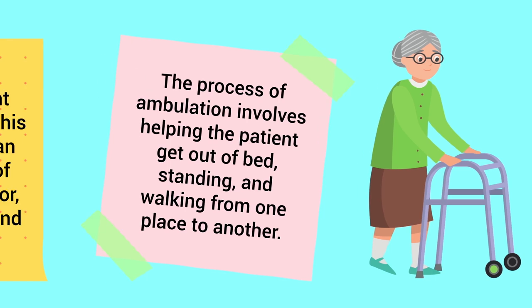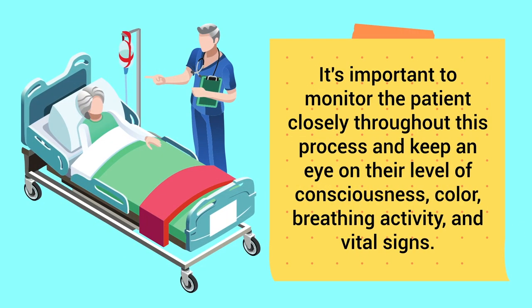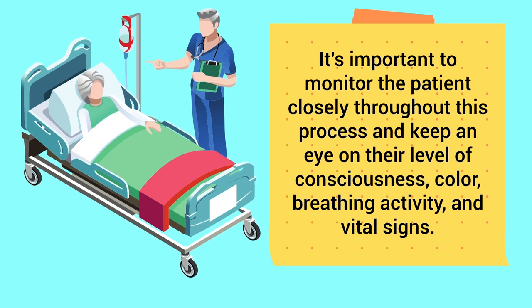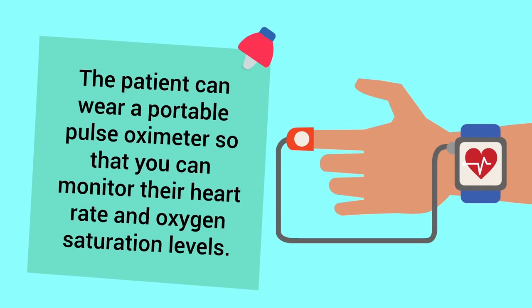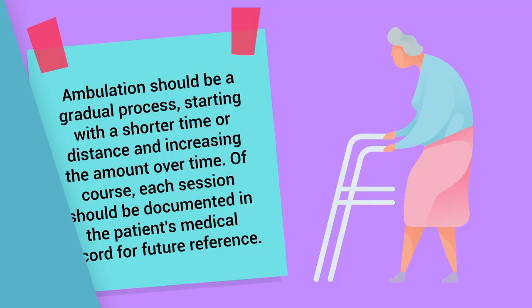The process of ambulation involves helping the patient get out of bed, standing, and walking from one place to another. It's important to monitor the patient closely throughout this process and keep an eye on their level of consciousness, color, breathing activity, and vital signs. The patient can wear a portable pulse oximeter so that you can monitor their heart rate and oxygen saturation levels.